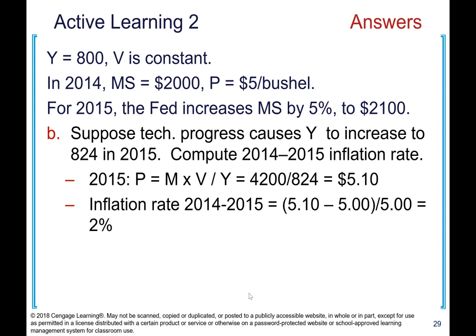Part B: suppose technological progress causes Y to increase to 824 in 2015. Compute the 2014–2015 inflation rate. In 2015, P equals M times V over Y equals 4,200 divided by 824 equals $5.10. Inflation rate equals (5.10 minus 5) divided by 5 equals 2%.